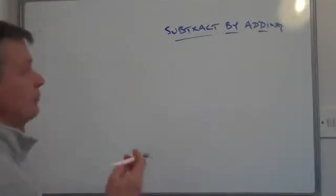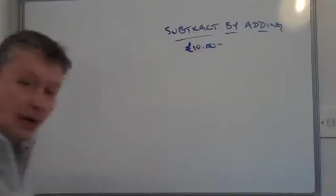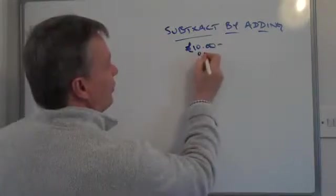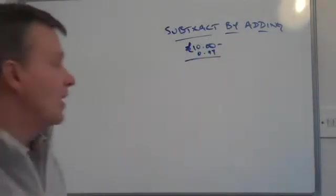Okay, the way this might be used is that let's say we've got £10 and we're buying an item for 97 pence. So I want to take away 0.97 from that total.